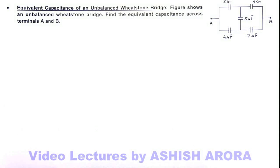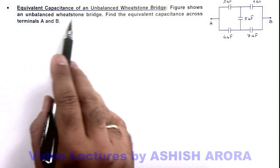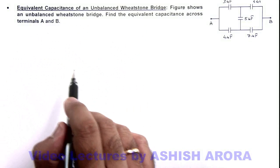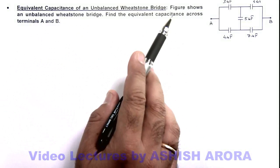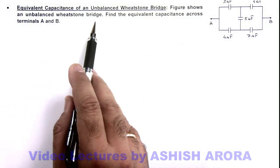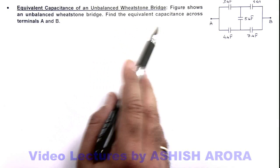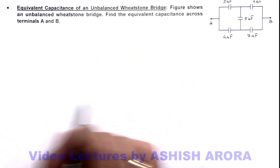In this illustration we'll study about the equivalent capacitance of an unbalanced Wheatstone bridge. Here you can see the figure shows an unbalanced Wheatstone bridge and we are required to find the equivalent capacitance across terminals A and B.